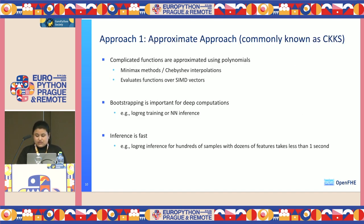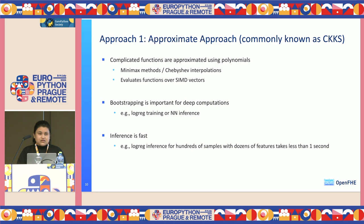In depth about the approximate approach, also known as the CKKS scheme: it is a technique for full homomorphic encryption for encrypted machine learning. It involves approximating complicated functions using polynomials and evaluating these functions over SIMD — single instruction multiple data — vectors. Key features include approximations of complicated functions, the minimax method, SIMD vector evaluations, and bootstrapping, which is an important technique for this approach. Due to time I won't go into all the details, but feel free to ask questions later.